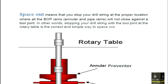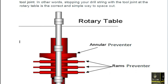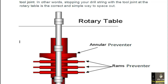Space out means that you stop your drill string at a proper location where all the BOP rams, annular, and pipe rams will not close against a tool joint. In other words, stopping your drill string with the tool joint at the rotary table is the correct and simple way for space out. The drill floor and the rotary table are the same thing. These are the tool joints.